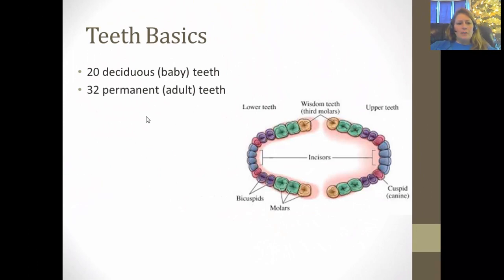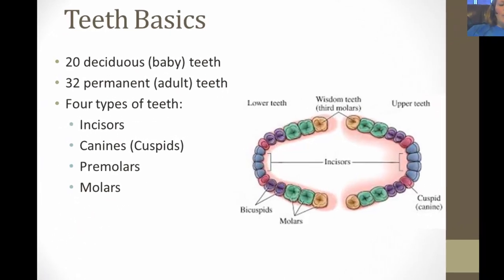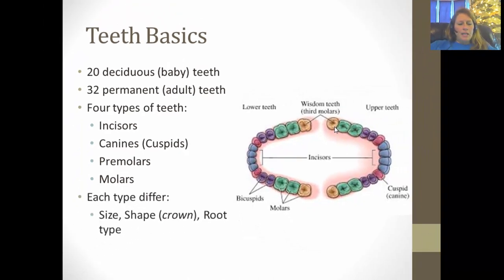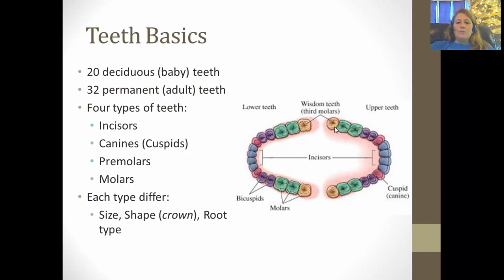As for the number of teeth: baby or deciduous teeth number 20, while permanent or adult teeth number 32 — or 28 if wisdom teeth have been removed. There are four types of teeth: incisors, the four in the front; canines or cuspids, used for tearing; premolars; and molars in the back. Each type varies in size, shape, and root type. We focus on the crown because its shape helps identify the bite mark pattern and determine characteristics to identify the perpetrator.